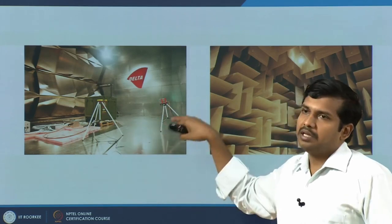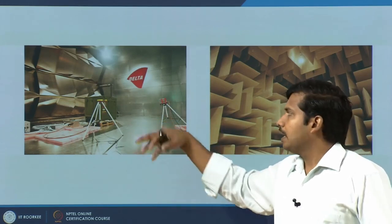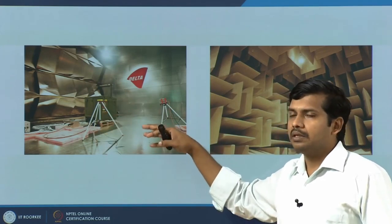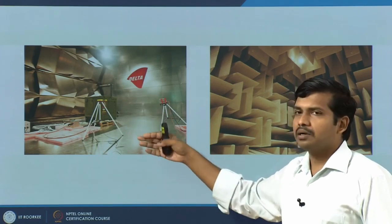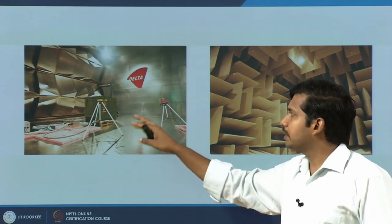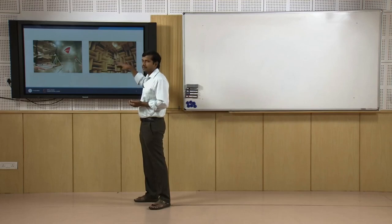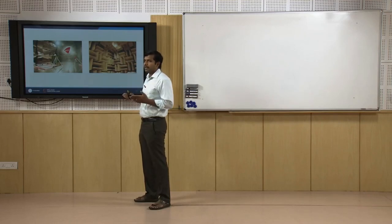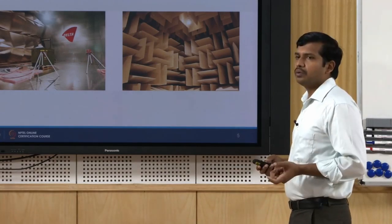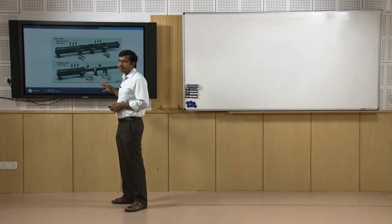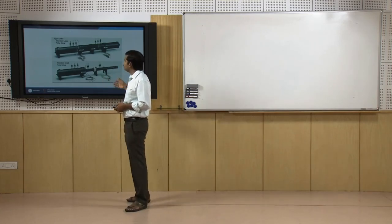Without any material, the chamber's reverberation time is taken, and after the material is mounted, the absorption is measured. There are various advancements in this method of measurement. This is an anechoic chamber — it has a lot of wedge-shaped surfaces, each one an absorbing surface. The surface area is very high and the absorption is really high. The reverberation time is negligibly low. The second type of measurement is called the standing wave method or the impedance tube method.